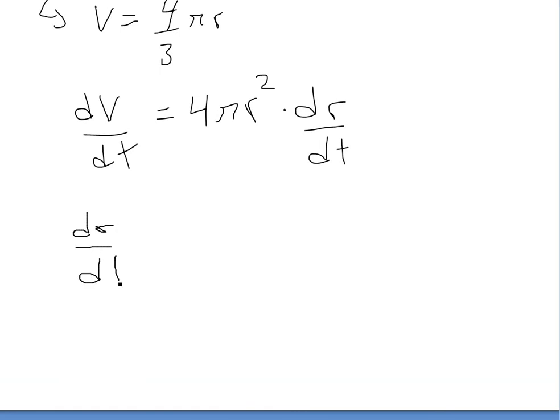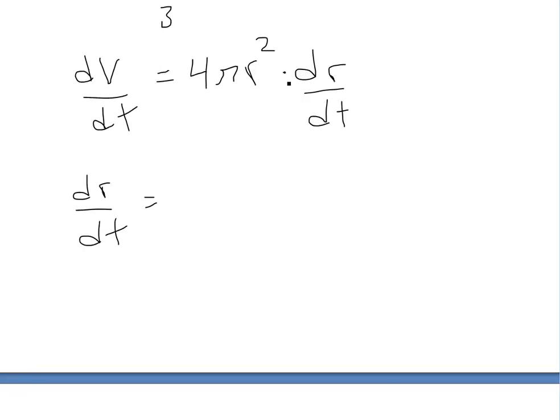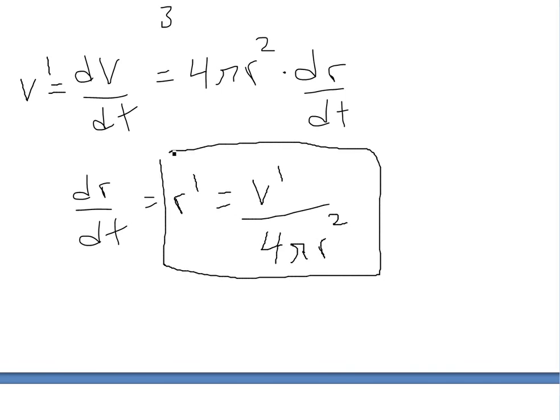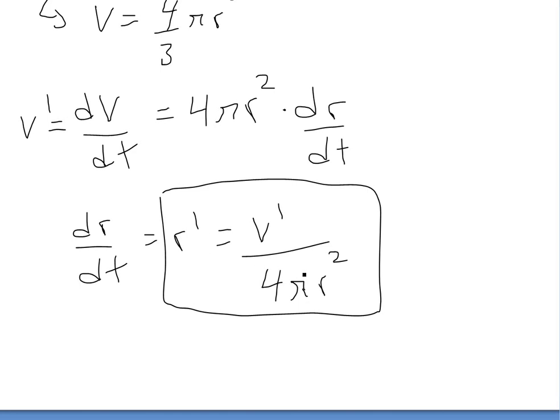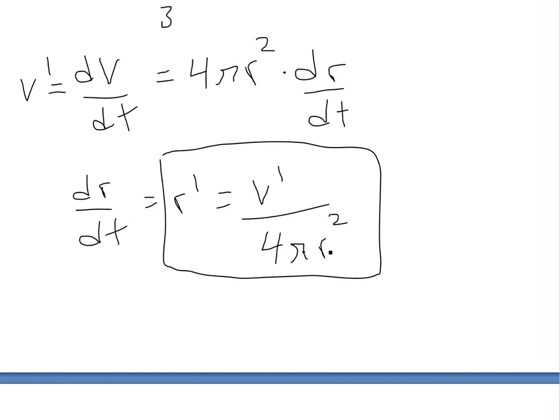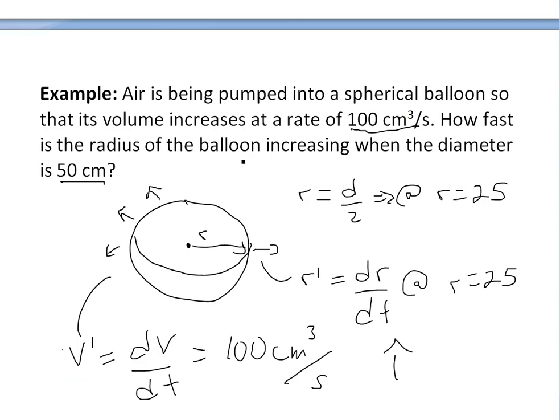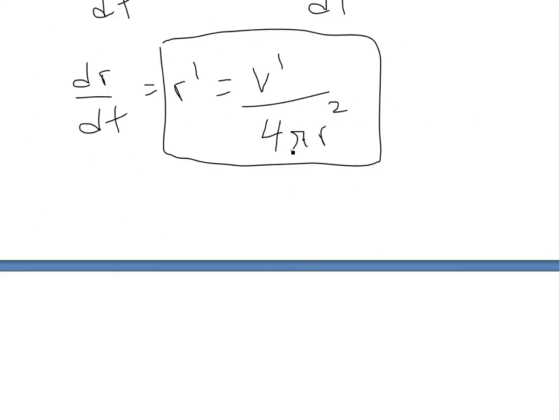Now we can solve for dr over dt. So basically dr over dt equals - we just divide this whole thing out to the right side - or I'll just go r prime is equal to v prime, that's just this, just to make it easier to write. Now divide by 4 pi r squared right here. So there is our function for the rate of change of the radius. But I can also make a note that this is not constant because it depends on what the radius is. As you increase in volume, the radius will change and then it will become basically slower because it's dividing by it. So it'll increase slower, as opposed to this one's a constant volume we're putting in.